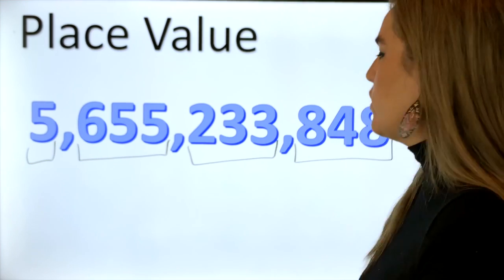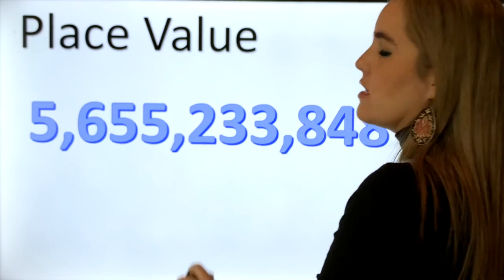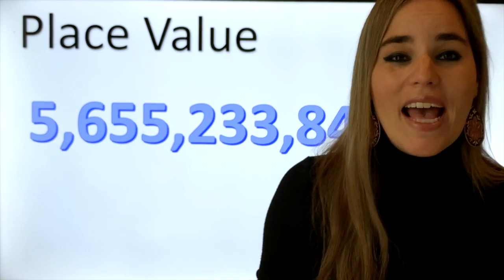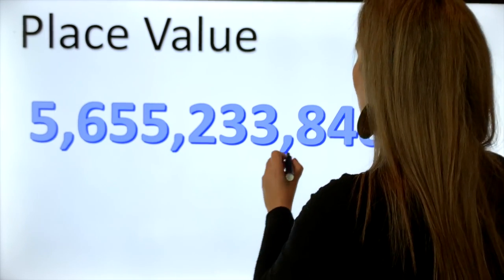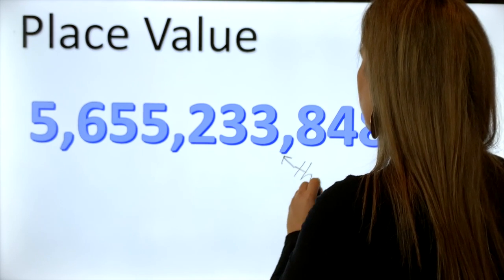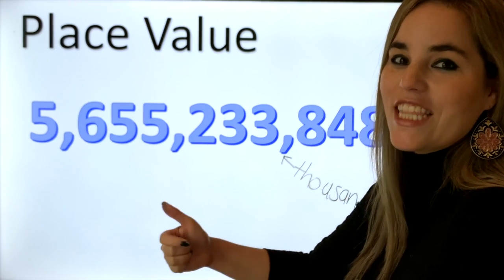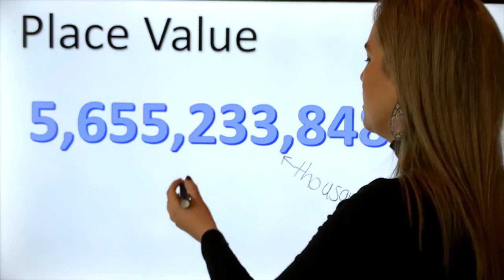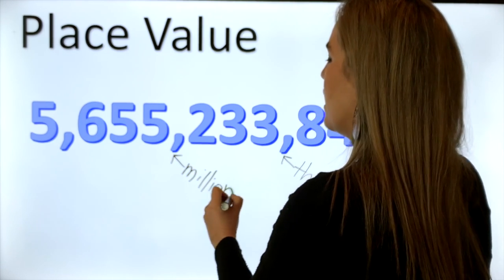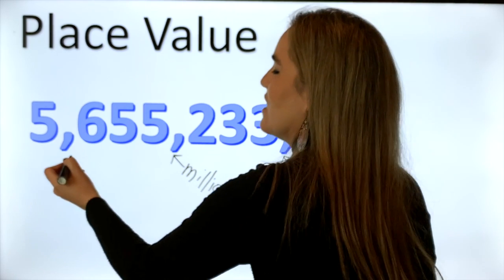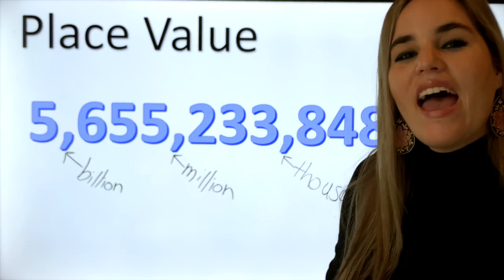So now how do we read this number? Let me tell you something — each one of these commas has a name, like I am Miss Sam and maybe your name is Daniel, Jesus, Benz, or Isla. Well, each one of these commas also has a name. The name of this first comma is thousand. You can start taking notes so you remember how to use this information for your first assignment. The name of this comma is million, and last but not least, the name of this comma is billion.